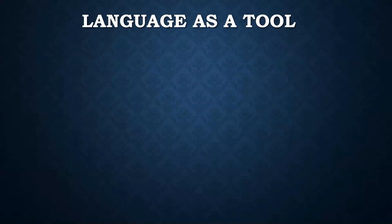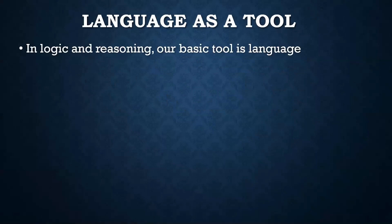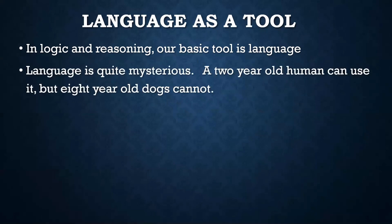Language is a tool. It is our most basic tool when we are doing logic and reasoning. This is what we use. And if you think about it, language is quite mysterious. On the one hand, a two-year-old human can use it, but an eight-year-old dog cannot.